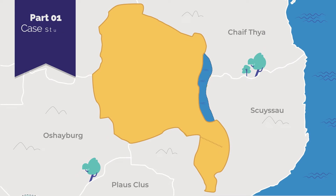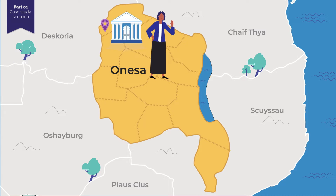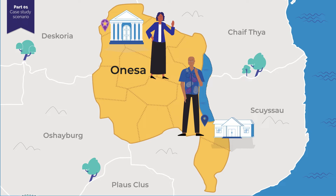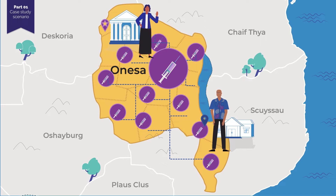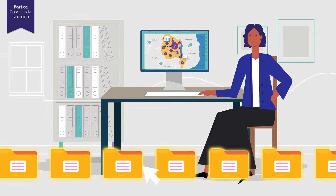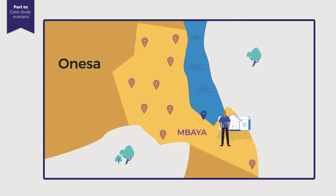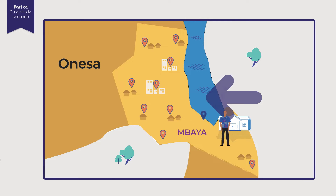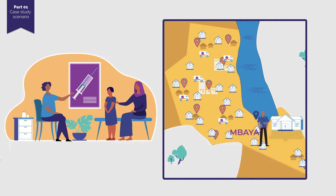Let's start with Part 1, the case study scenario. In the fictional country of Onessa, Lucy, the National Immunisation Officer at Onessa's Ministry of Health, and Isaac, the District Health Officer of MBAYA, are planning an upcoming child vaccination campaign to get child immunisation numbers up nationally. Lucy has been put in charge of managing the national campaign across all the districts, and she starts by working in the most populated district first — Isaac's district of MBAYA. Isaac's district includes some rural areas as well as some smaller city centres, and in this campaign he will need to provide immunisation to children in all areas through facilities and mobile clinics.